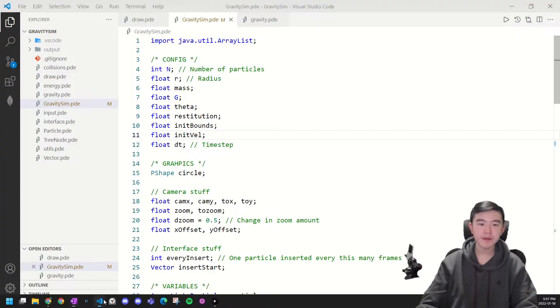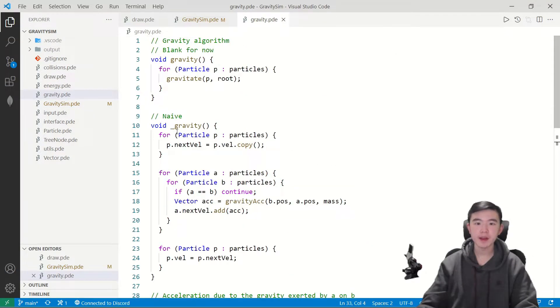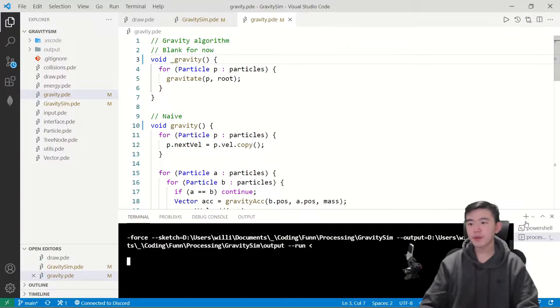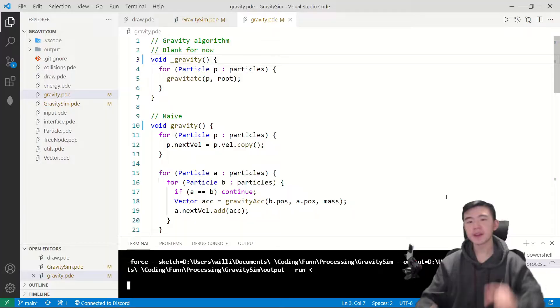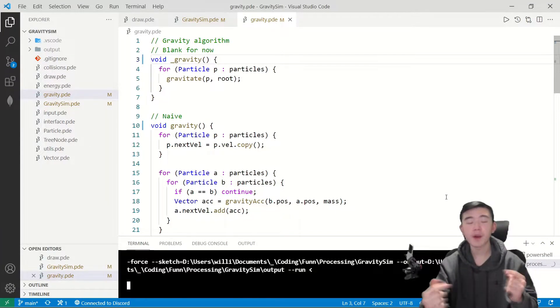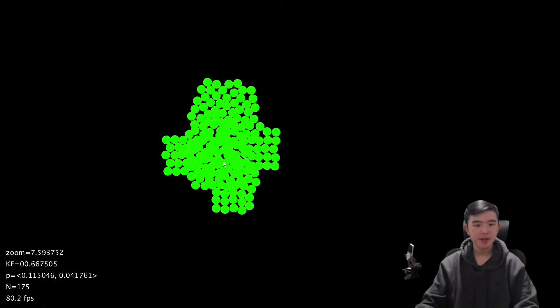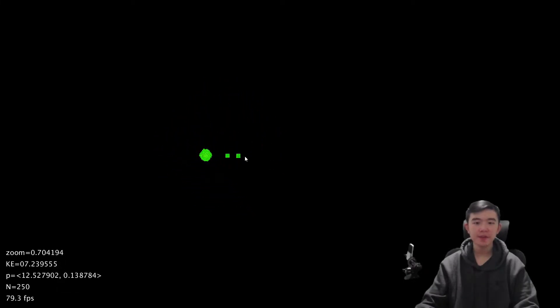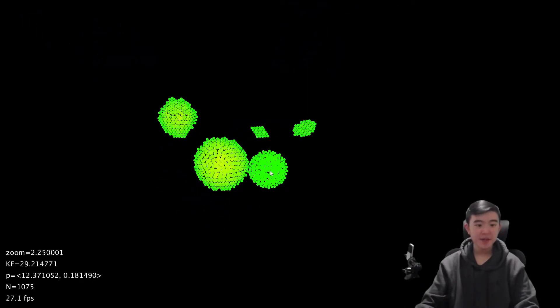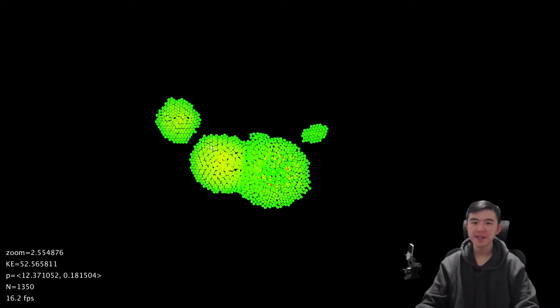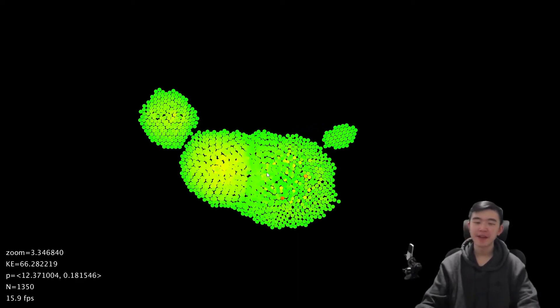So you can imagine, if we use this naive algorithm, and I'm just going to swap that out right now. If we run this with a naive algorithm, just calculating all pairs of points and doing gravitational force between them, that's going to be quite slow. So let's add a few points. 100 points, 200 points, it's all running fine so far. But let's say we get to 1,000 points. Getting to 1,000 points, it slows down to about 20 frames per second. So you can see there's a considerable amount of lag right here.